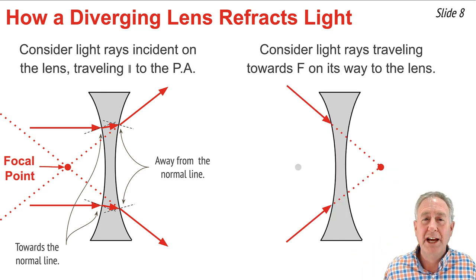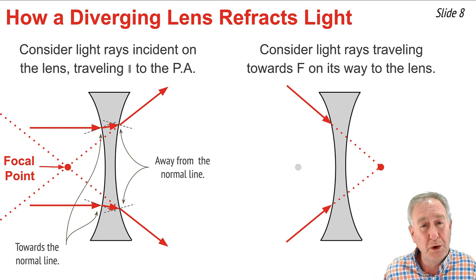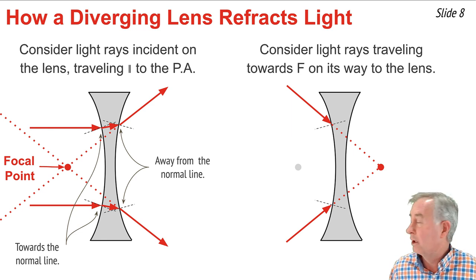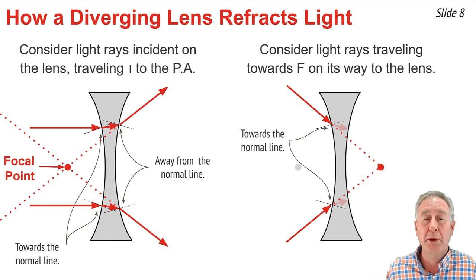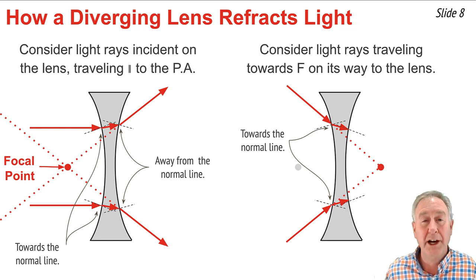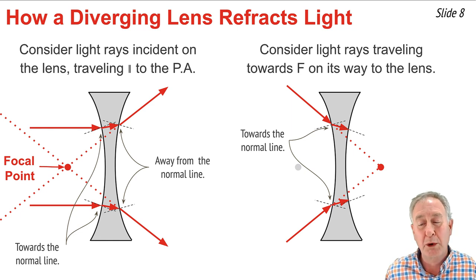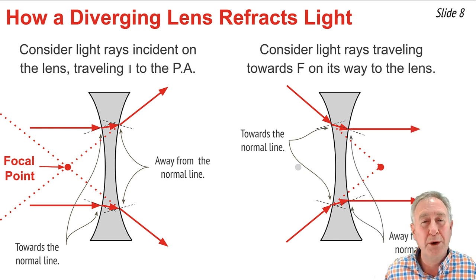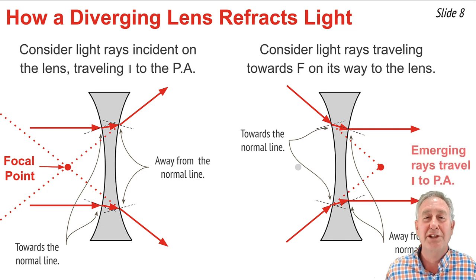Let's consider the same diverging glass lens, but this time the rays of light are traveling towards a focal point on the opposite side of the lens. However, they'll reach the lens first and encounter a normal line, and refract towards that normal line, passing through the lens to the opposite side, where the light rays will encounter another normal line and this time refract away from the normal line. The net effect of all the refraction is that the light rays will emerge from this diverging glass lens traveling parallel to the principal axis.